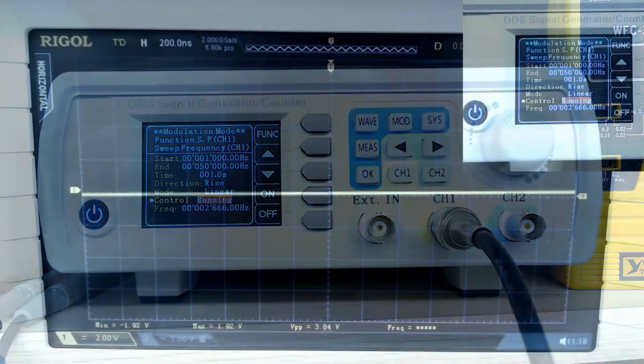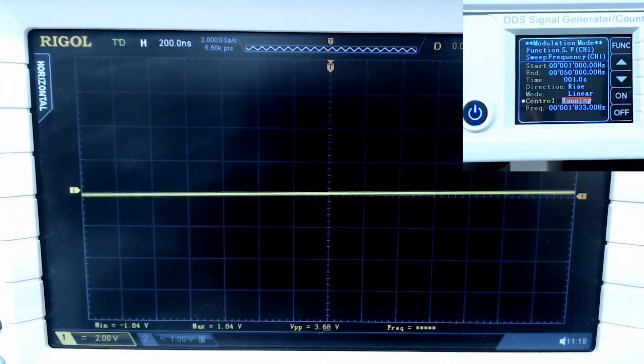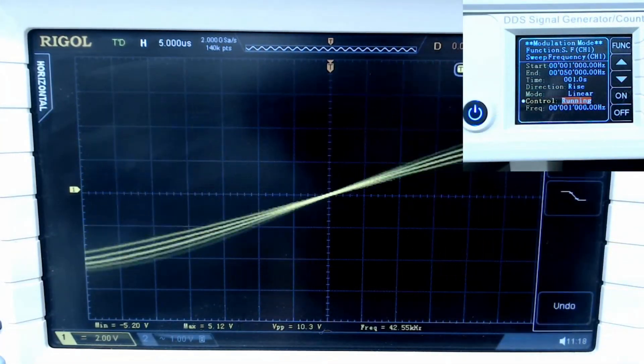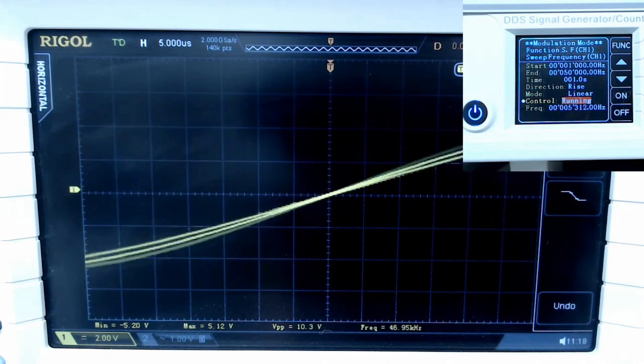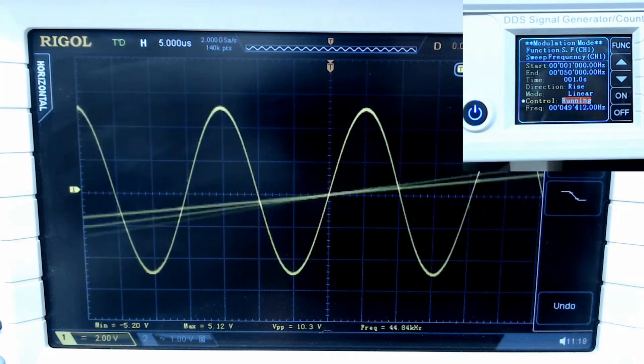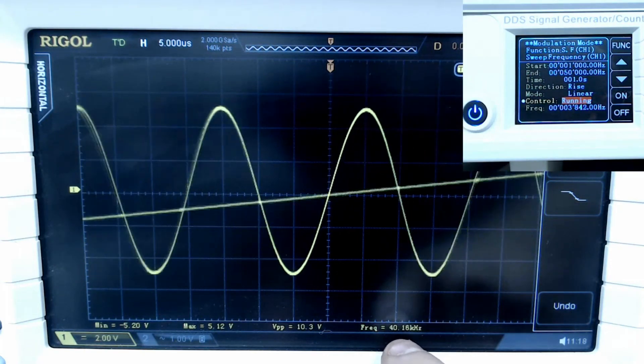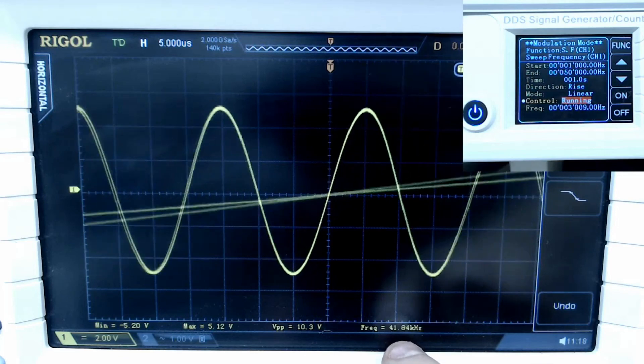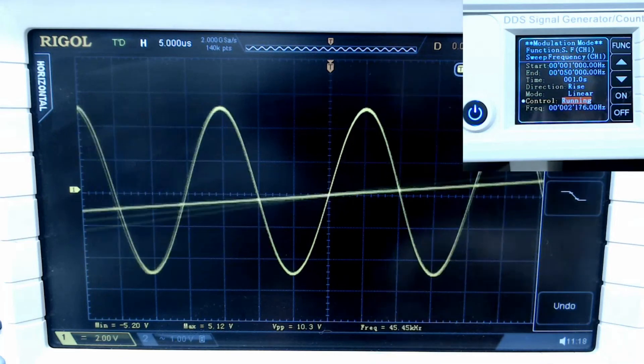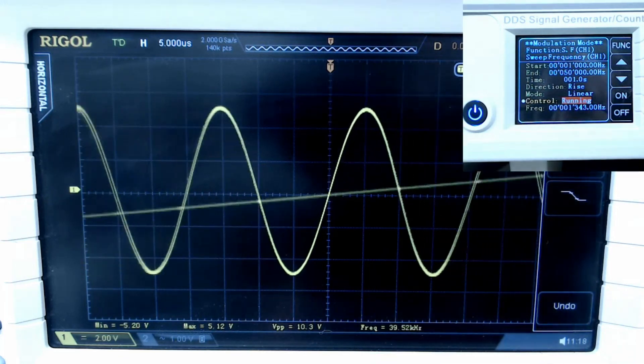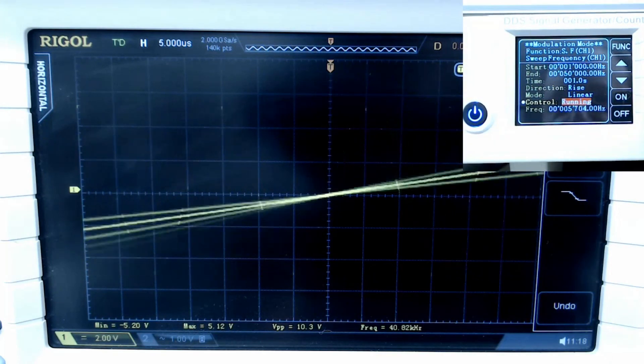Let me turn on the scope so you can see what it's actually doing. There you go, you can see it sweeping from one kilohertz to 50 kilohertz. You can kind of almost see it down here. I don't know if you can see that number at the bottom but you can see it, the scope calculating it, trying to as fast as it can. So it works really good.